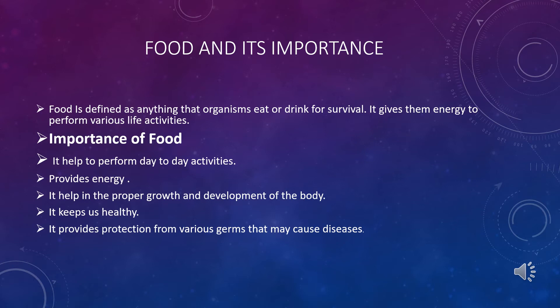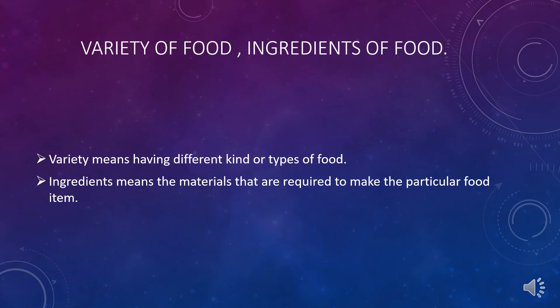So eat healthy and be healthy. Now, this topic will tell you about variety of food. Variety means having different kinds or types of food. For example, in breakfast we take chapati with vegetables or milk; in lunch we prefer boiled rice, pulses, and salads with green leafy vegetables; and in dinner we take lighter food like chapati with dal or vegetables. We should try to consume as much variety of food as possible to boost our immunity.